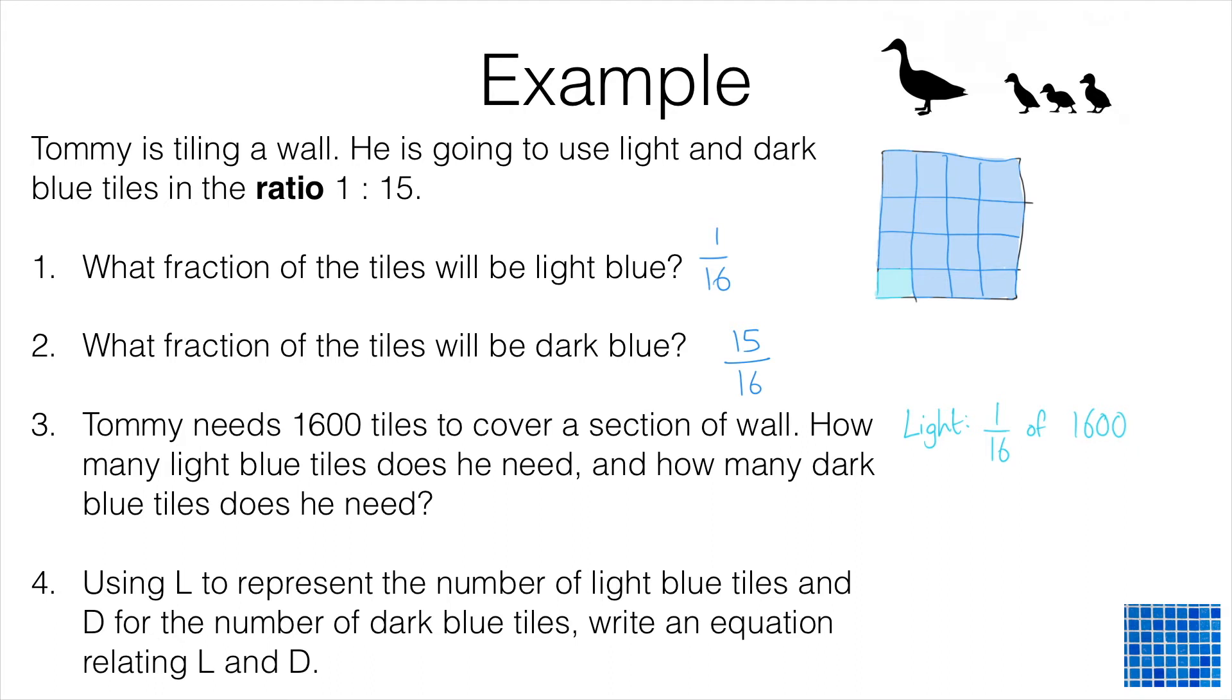Now one sixteenth of 1600 is simply 1600 divided by 16. Remember if you're trying to find a sixteenth of a quantity, what you want to do is divide that quantity into 16 equal parts. And 1600 divided by 16 is 100.